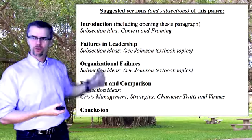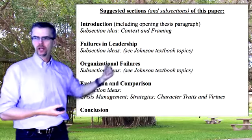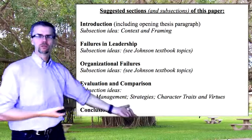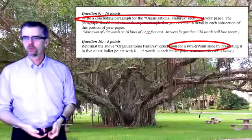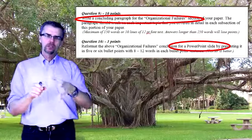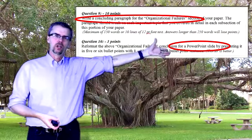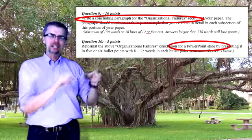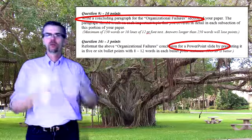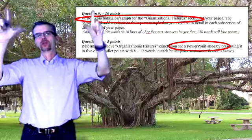We're going to repeat this for the organizational failures section of your paper, the evaluation and comparison section, and your conclusion. Question number nine: write a concluding paragraph that fits neatly as the concluding paragraph of the whole organizational failures section. You're going to start the section and say, the organizational failures I'm going to focus on are these — thinking about the they said, I said format of a critical paper.